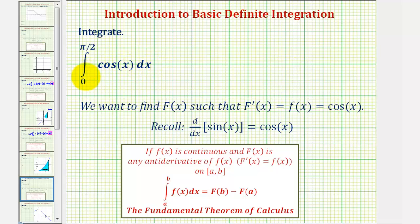We want to integrate cosine x from zero to pi over two. To do this, we'll use the fundamental theorem of calculus stated here below, where if the integrand function f of x is continuous...